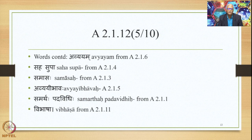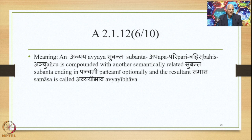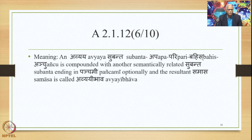Now let us look at the words continued from the previous sutras. Avyayam continues from 2.1.6, Sahasupa continues from 2.1.4, Samasaha continues from 2.1.3, Avyaibhavaha from 2.1.5, Samarthappadavirihi from 2.1.1, Vibhasha from 2.1.11. Having put all these words together, we get the meaning of this particular sutra: an Avyaya Subanta, namely Apa, Pari, Bahis, and Anchu, is compounded with another semantically related Subanta ending in Panchami Vibhakti optionally, and the resultant Samasa is called Avyaibhava.